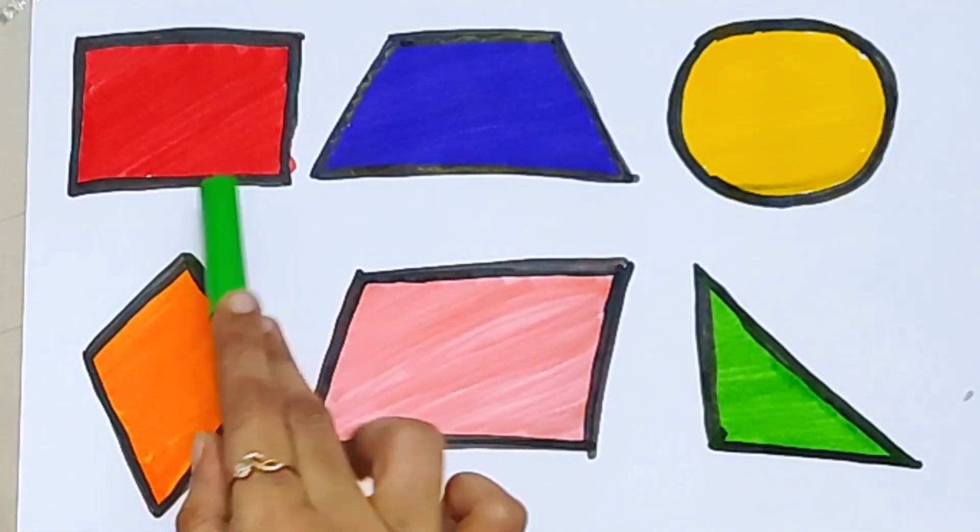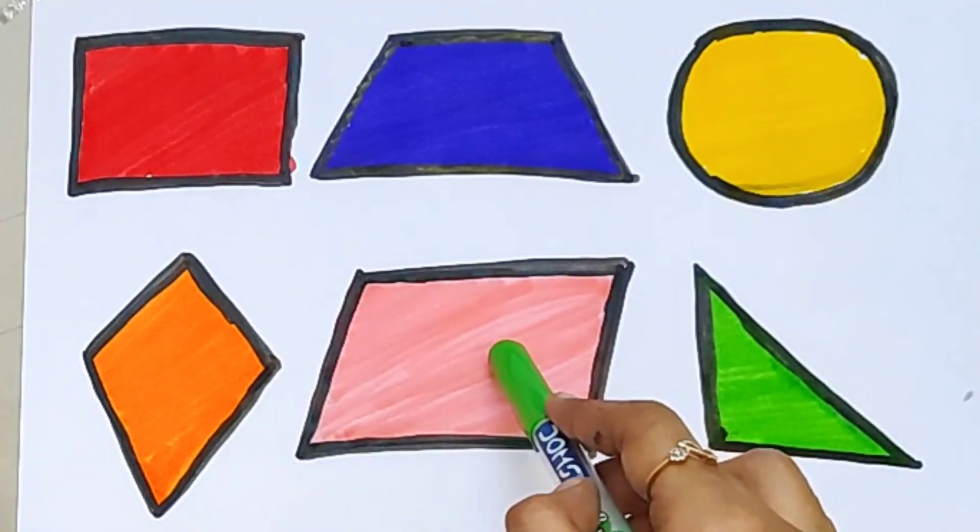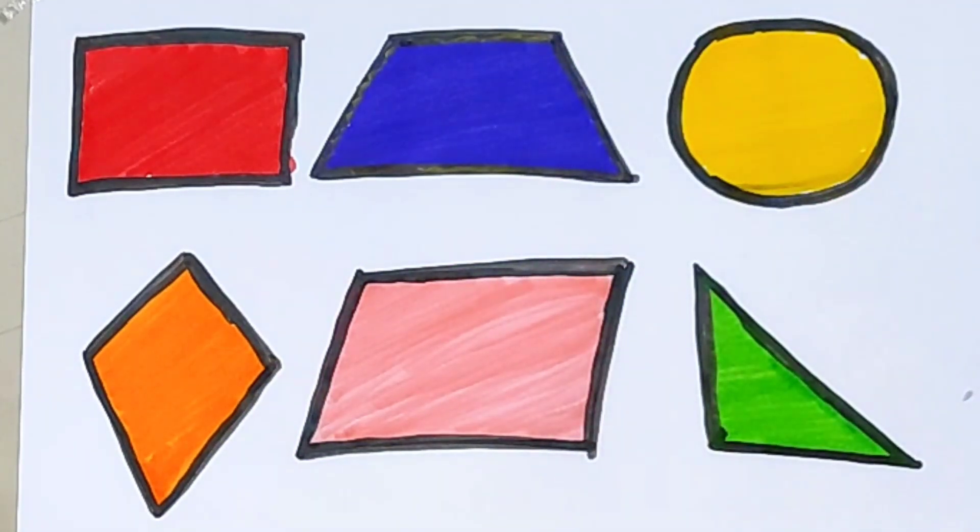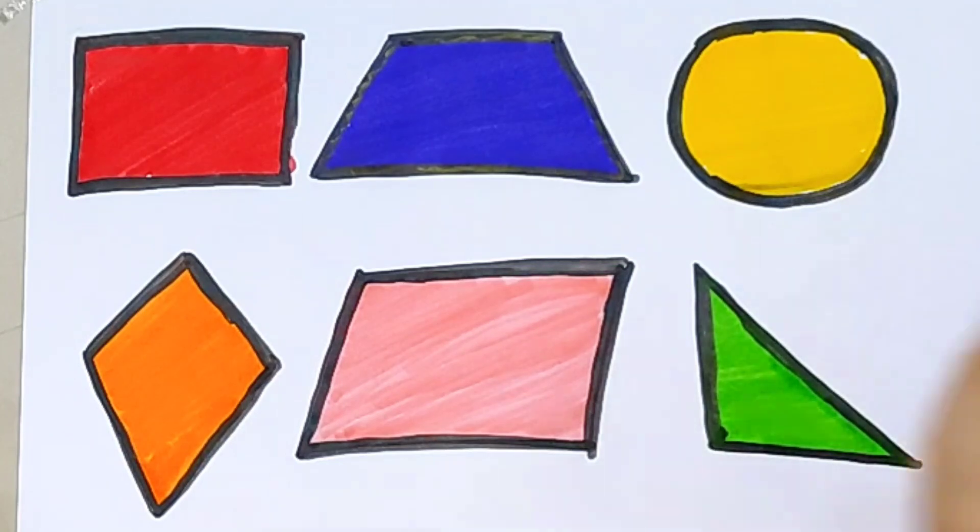Square, trapezoid, circle, kite, parallelogram, right triangle. Thank you for watching children. Please don't forget to like and subscribe. Bye bye.